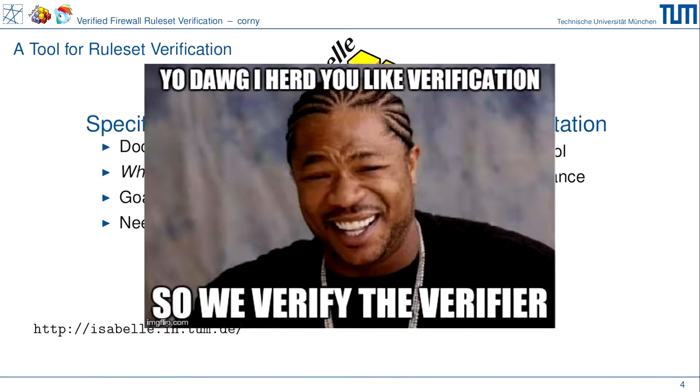We will implement everything in the Isabelle theorem prover. Why? Because documentation often lies — it's out of date. We want to write an implementation and prove it corresponds to the specification, so we have a proof that our code really does what it's specified to do. To summarize: we will write a verifier for rulesets and verify the verifier itself.